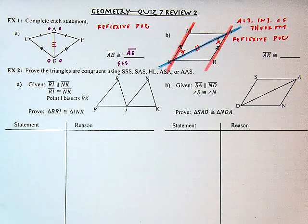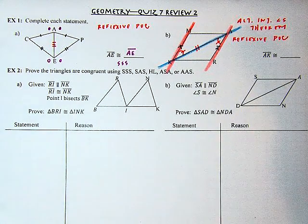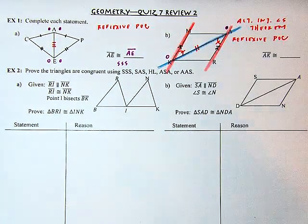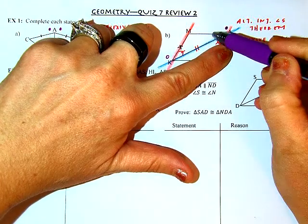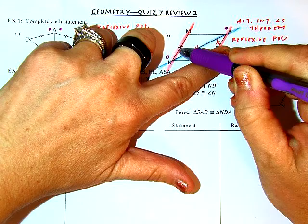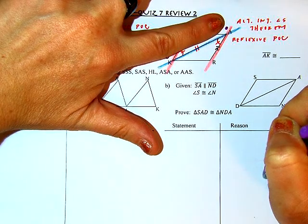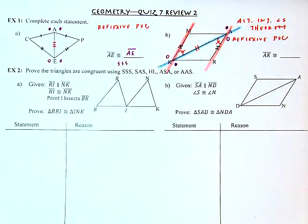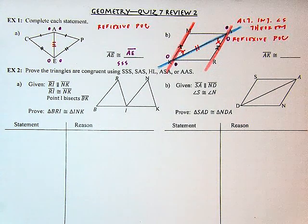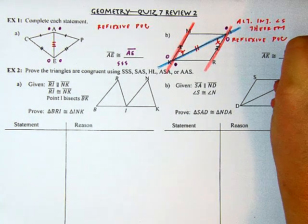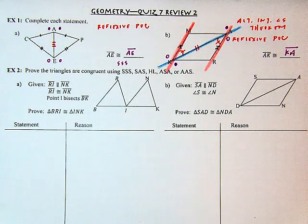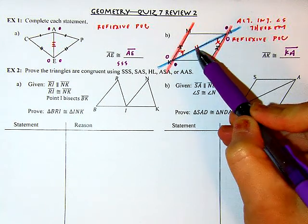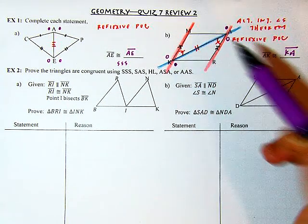How would I write that common side? In the first triangle, I'm reading it from A to K — from an angle that's not marked to the single tick mark angle. For the bottom triangle, the unmarked angle is K and the single tick mark is A, so the order reverses: K to A. My reason would be the reflexive property of congruence. We have side-angle-side — the angle is sandwiched between those two known sides. SAS.